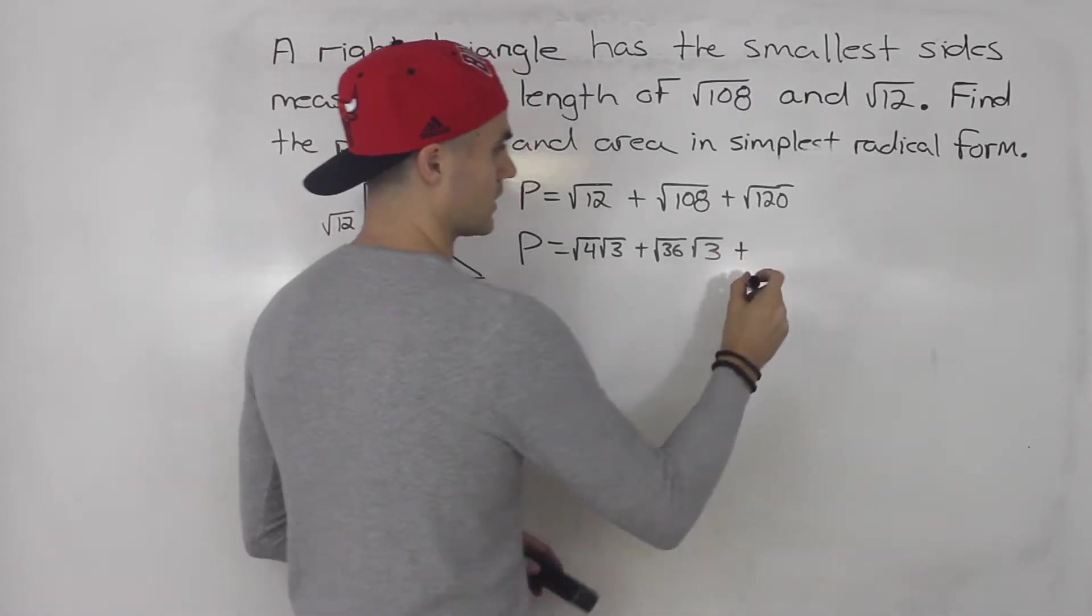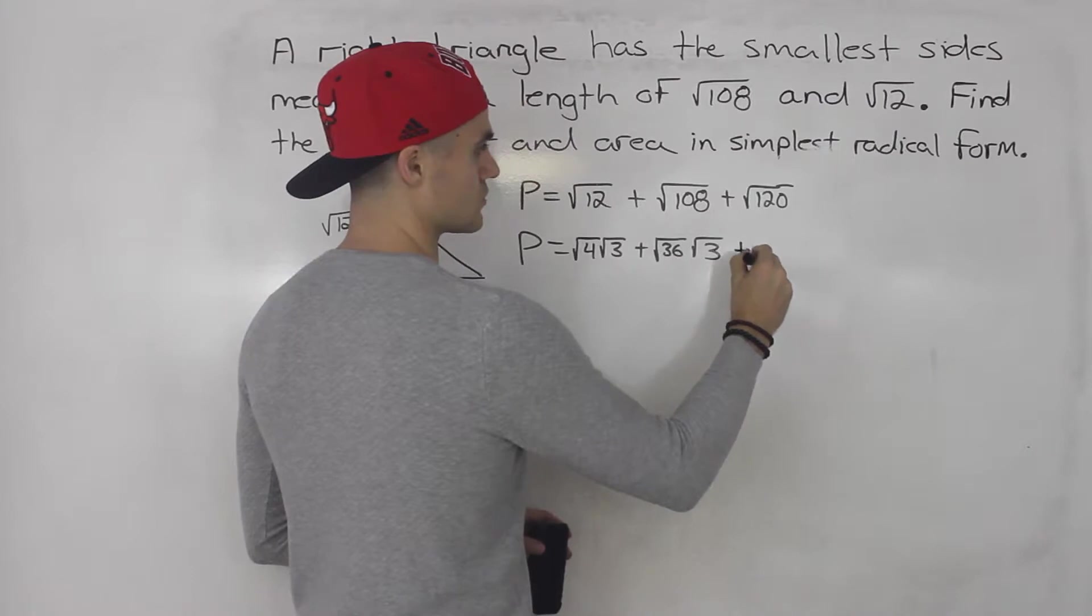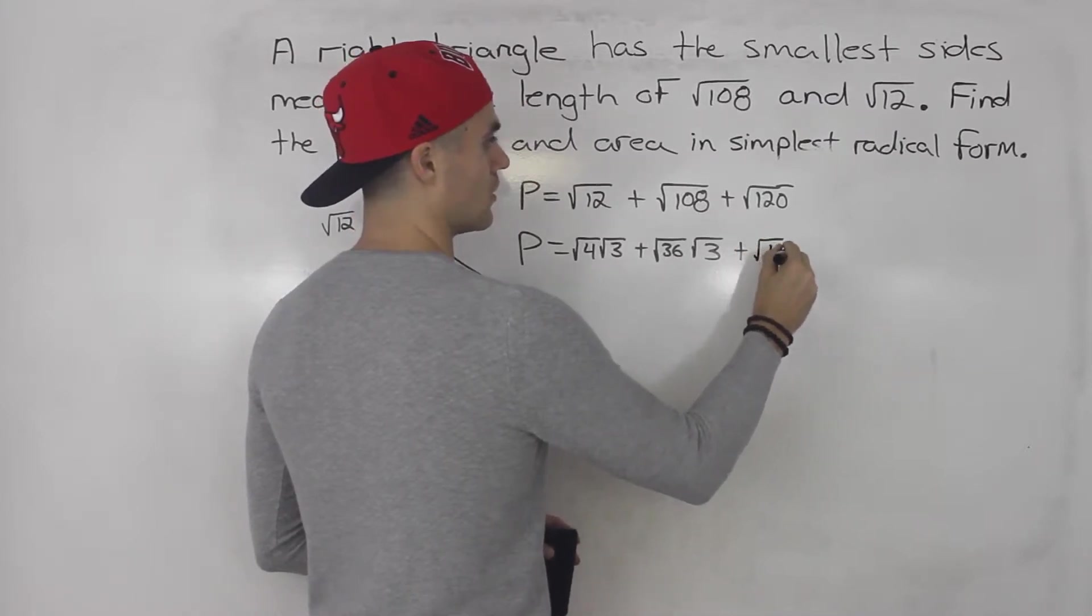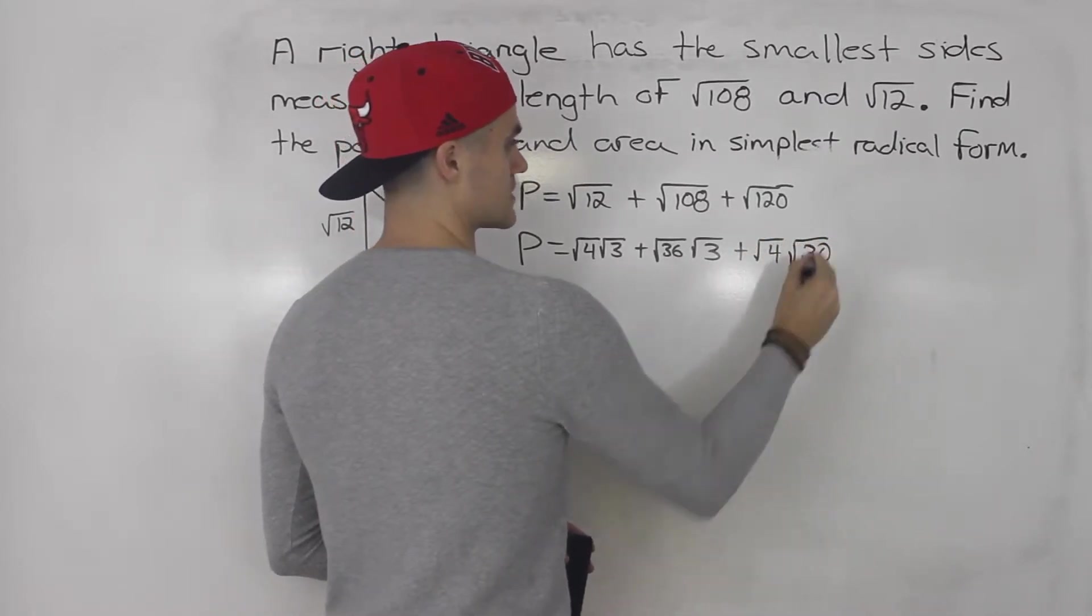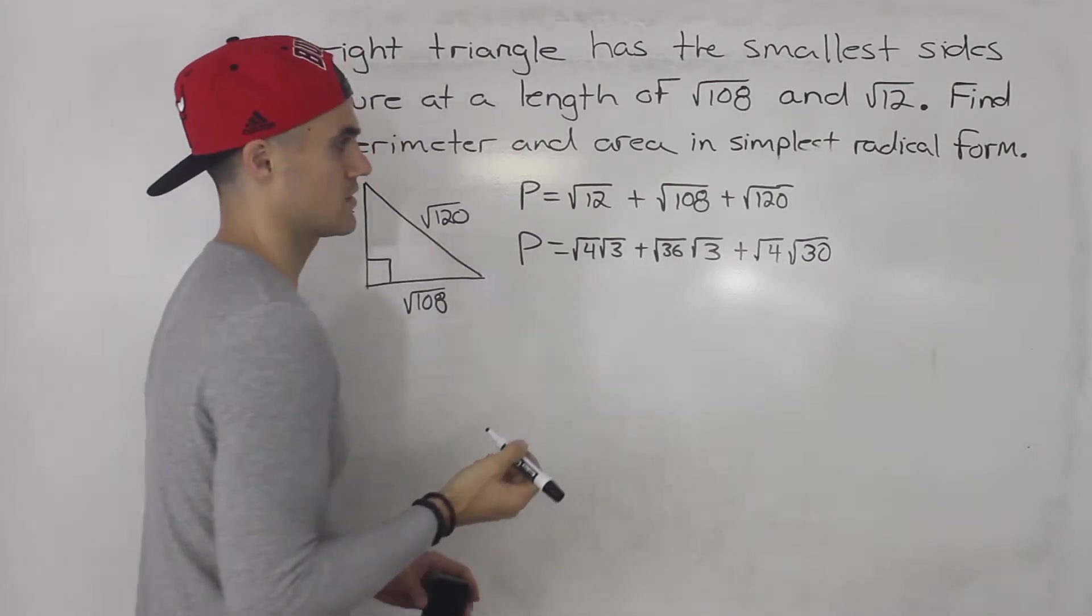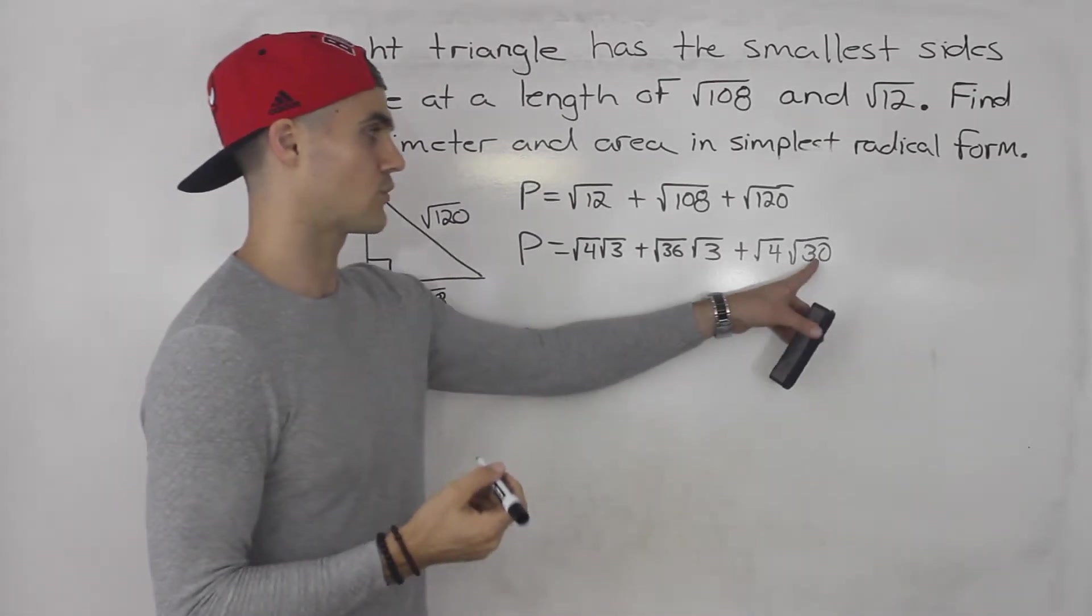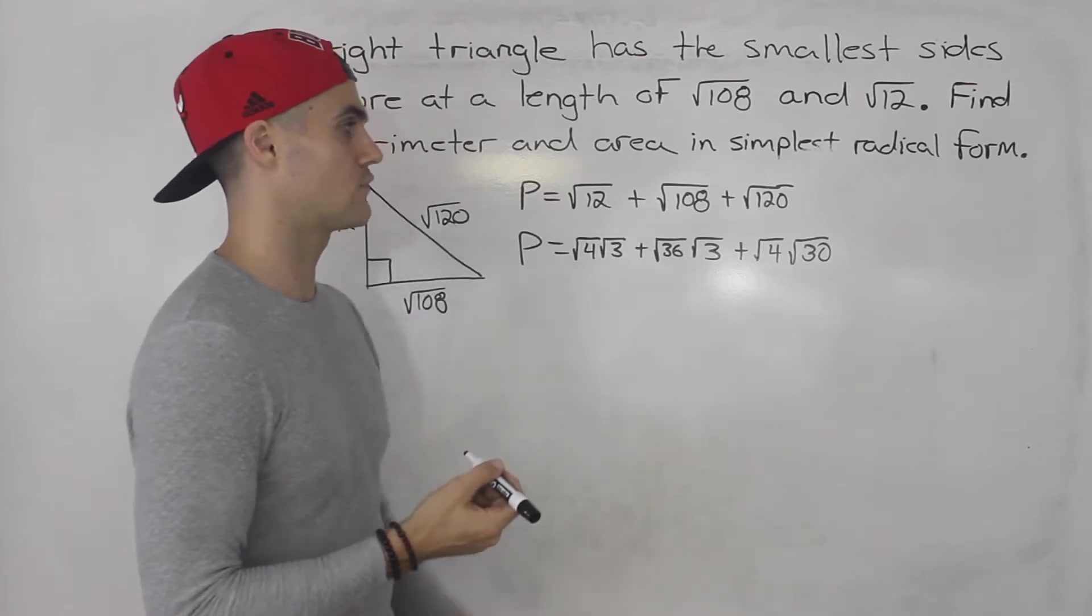And then root 120, we could break that down into root 4 times root 30. 4 times 30 gives us 120. And then the root 30, we can't break that down any further.